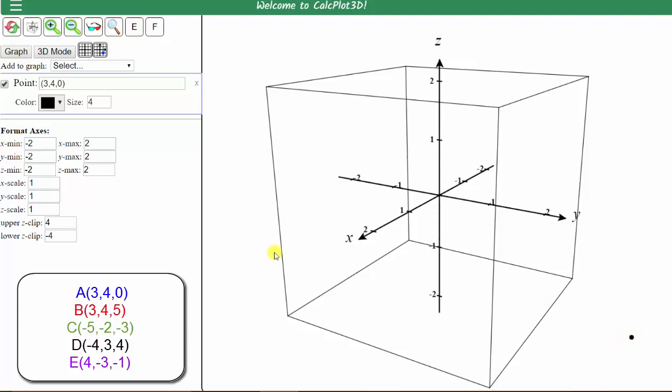This means we need to adjust the window to get a better view of this point in space. We can adjust the window manually here below, or we can just zoom in or out using the plus or minus above. Let's click the minus to zoom out. Notice now we have a nice view of this point in space.